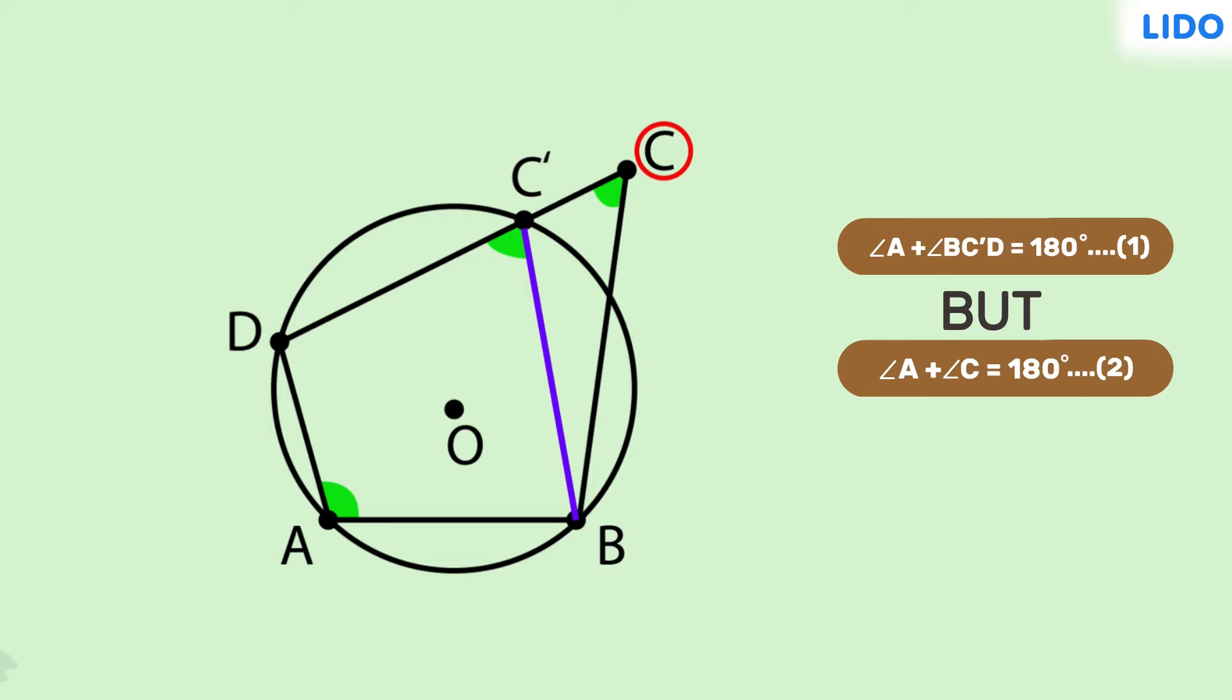But it is given that angle A plus angle C is 180 degrees. Let's mark this as equation 2. From these two equations, we can clearly observe that angle BC'D is equal to angle C. Let's mark this as equation 3.